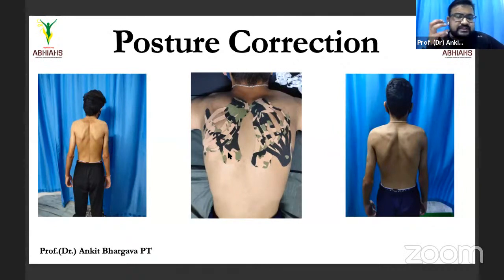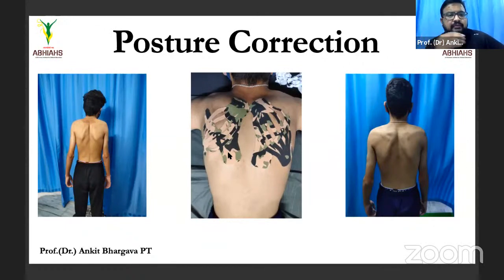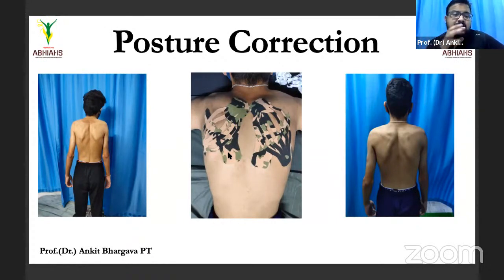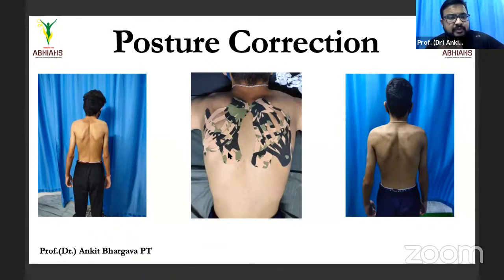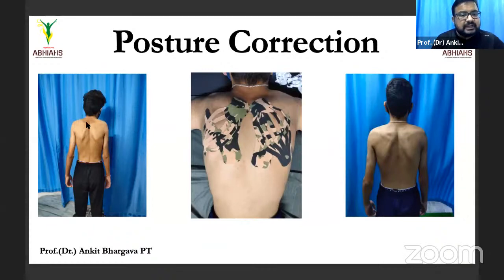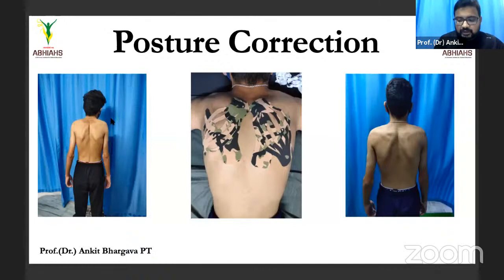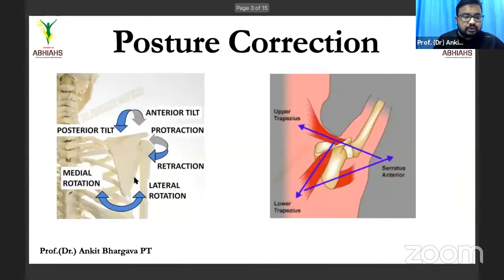In correcting posture, we always release the tight muscles first, then go for manual adjustments of the bone, then relax or strengthen the muscle with theraband exercises, and then apply the tape in a manner that holds the corrected position. If you can see the scapula is completely displaced, we have to bring it back to its normal position.